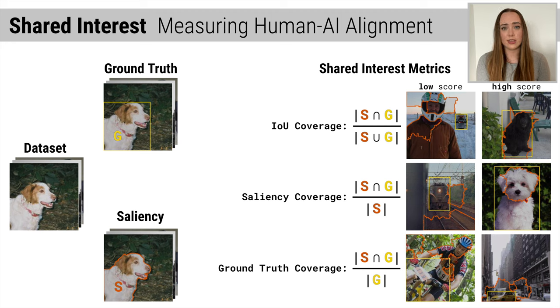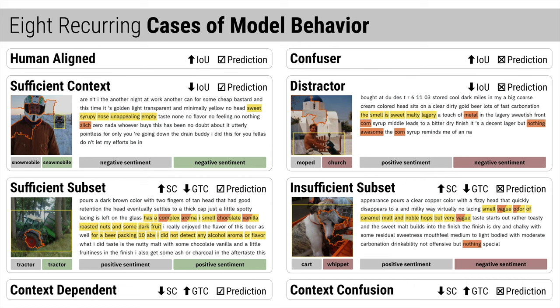Using these scores, each image in the dataset is quantified, allowing us to systematically sort and explore them to understand model behavior. Applying Shared Interest to a variety of models uncovered eight common cases of model behavior that persisted across modality, task, and saliency method.